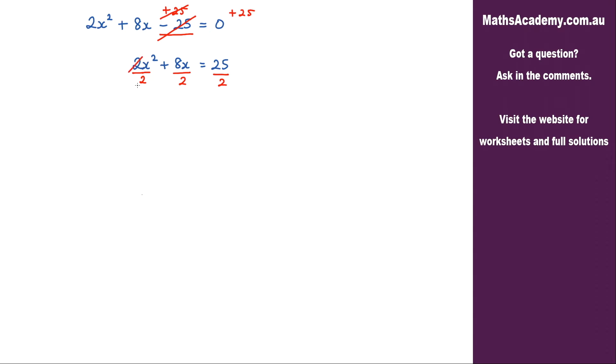Now these 2s will cancel so I'm left with x² plus the 8 and the 2. That will give me 4—8 divided by 2 is 4. x equals 25 over 2.